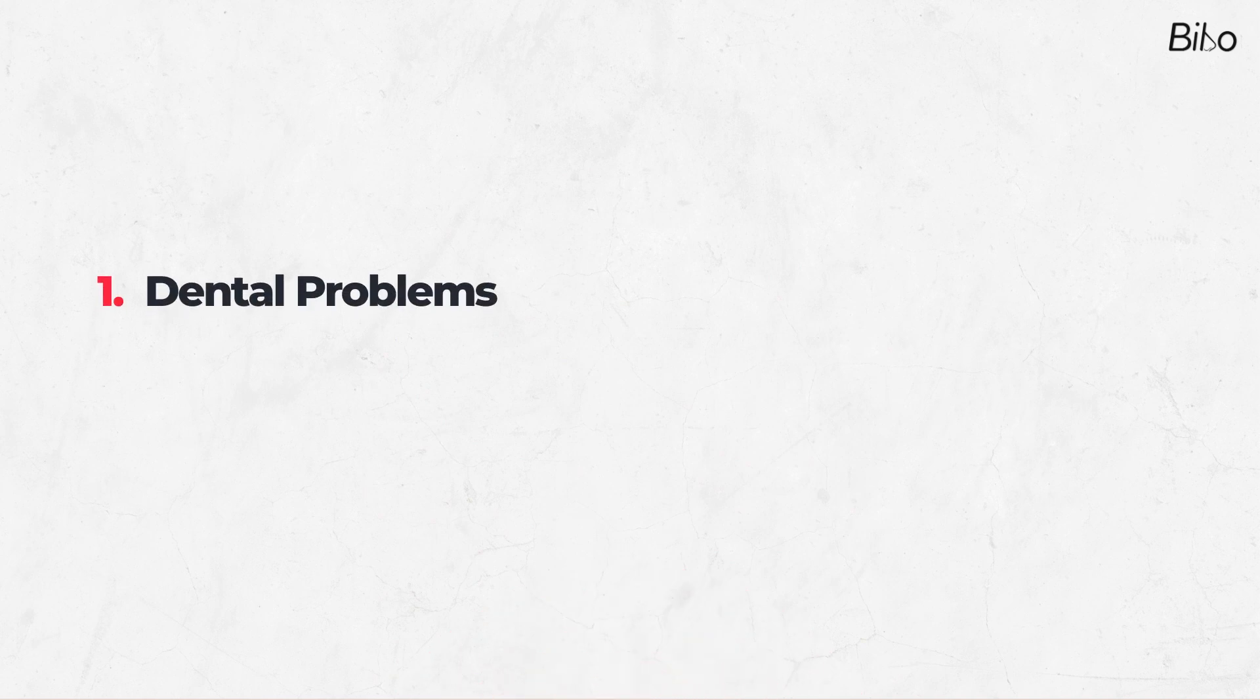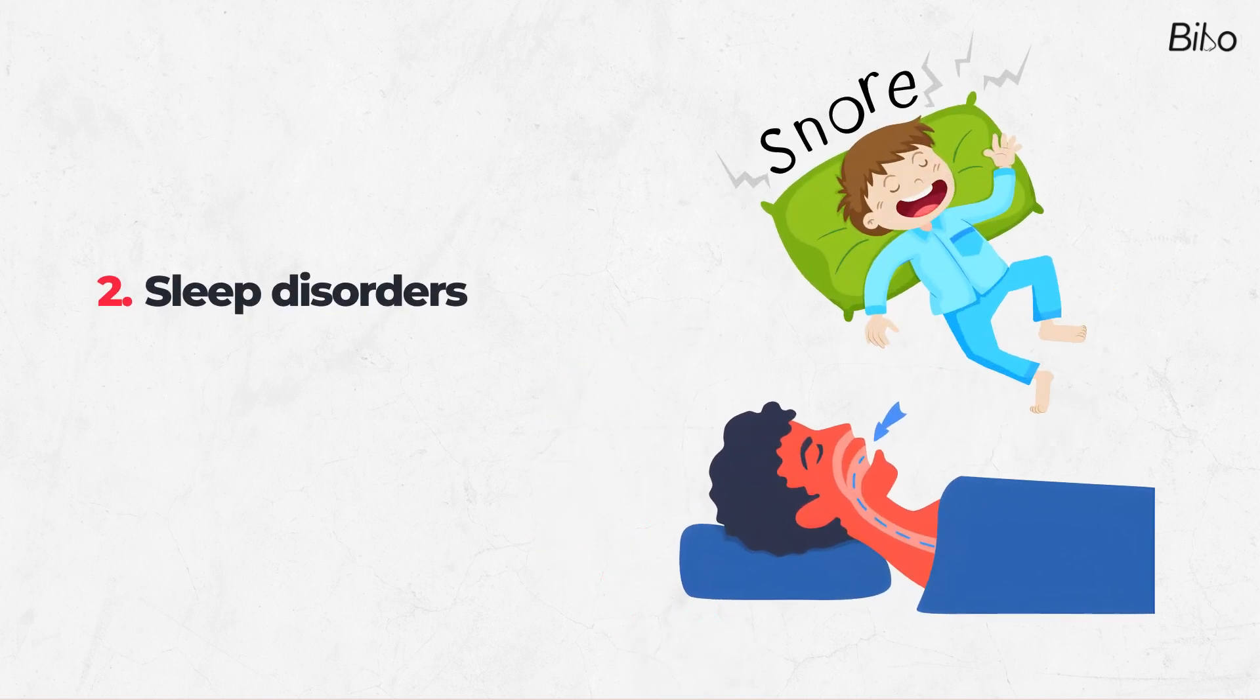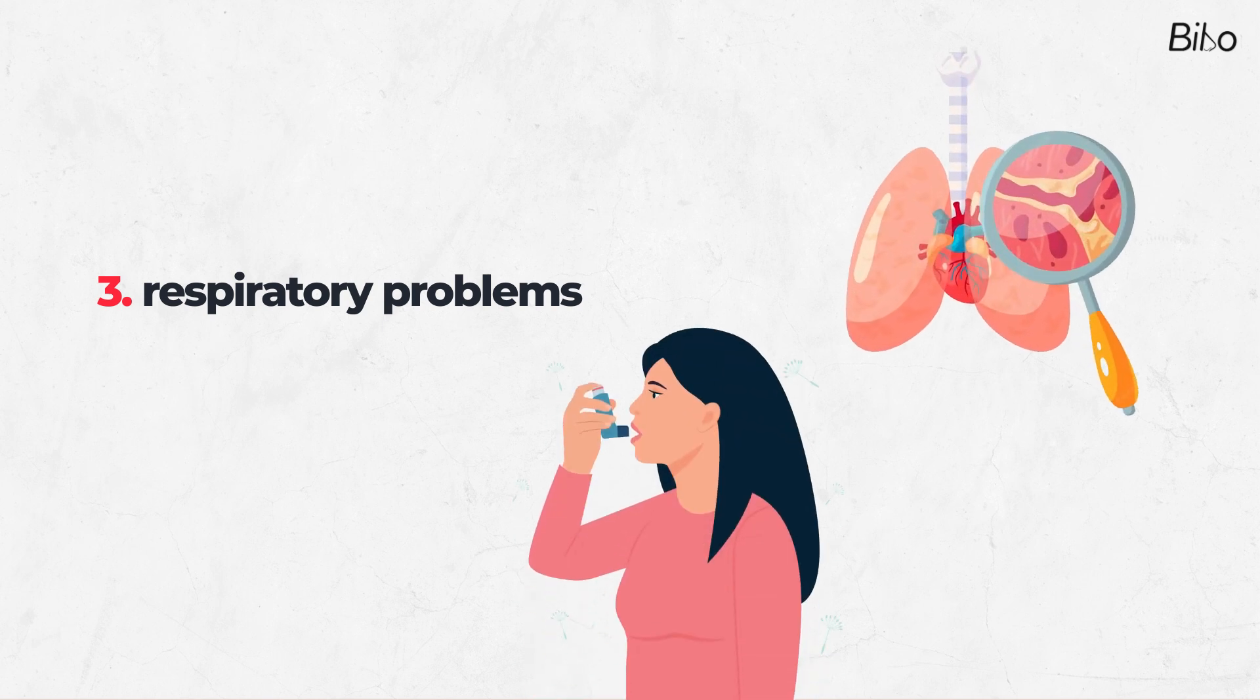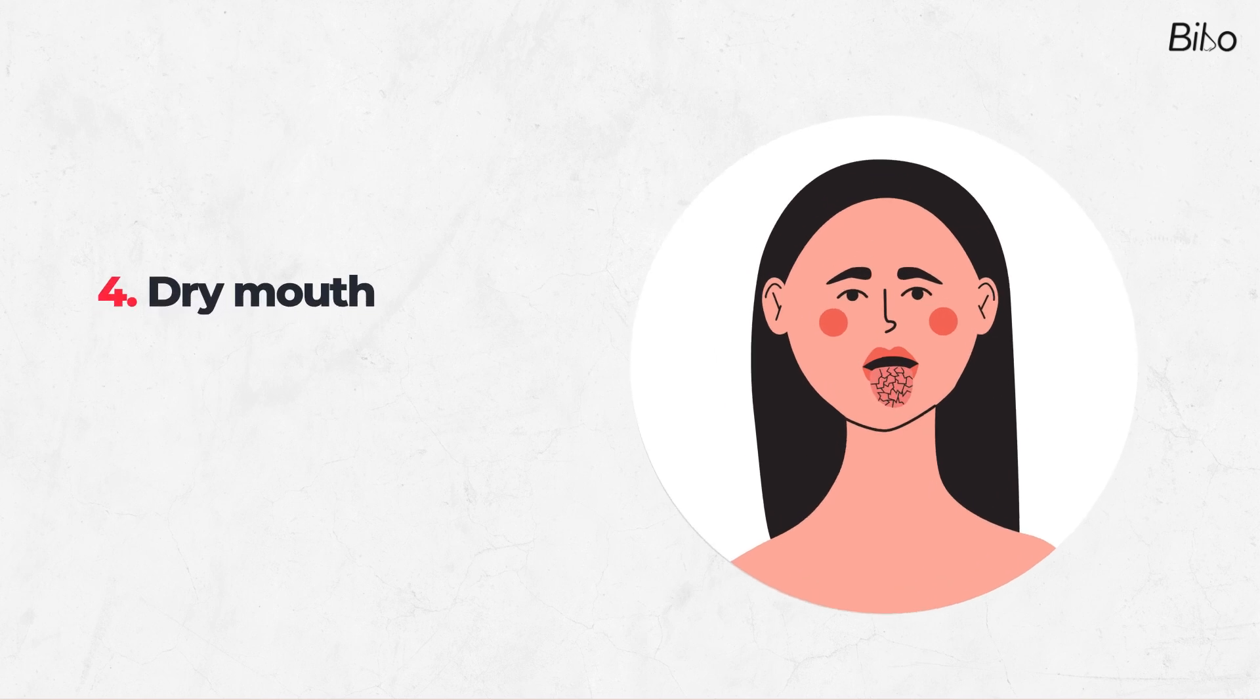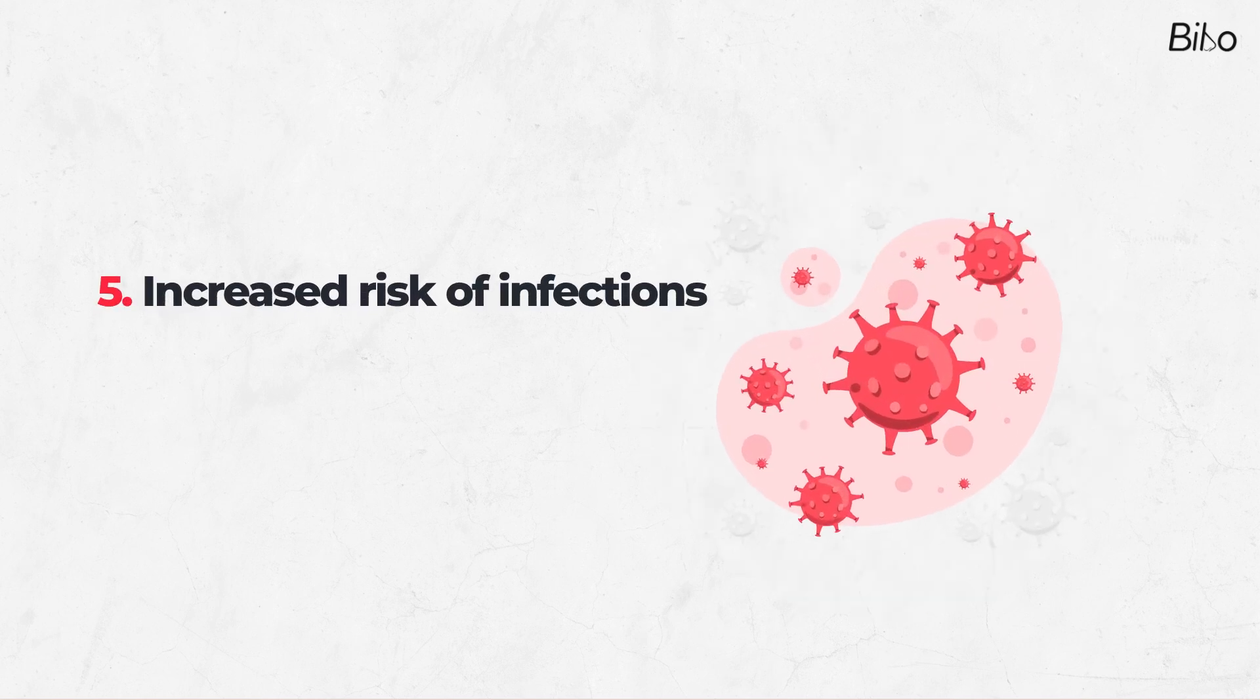Number one: dental problems such as tooth decay, gum disease, and bad breath. Number two: snoring, sleep apnea, and other breathing-related sleep disorders. Number three: mouth breathing can lead to respiratory problems such as asthma, bronchitis, and pneumonia. Number four: dry mouth. Number five: increased risk of infections.